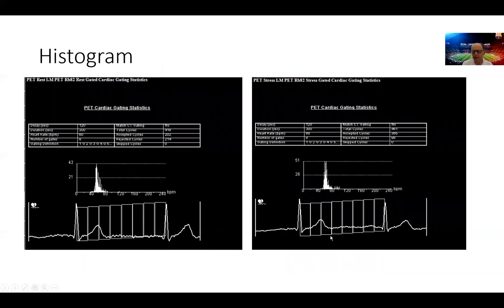The next stop is to make sure we ascertain that we acquired the gated images properly within a reasonable histogram. These are the histogram for the gated images during the rest images where the heart rate was 60, and this is during the stress images where the average heart rate was 68. Again, this is a very narrow histogram indicating that the patient was in regular rhythm or in a controlled rhythm with no extra ectopy or variability in heart rate.